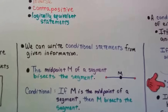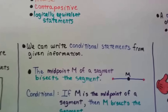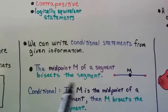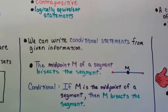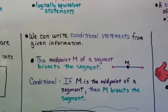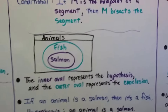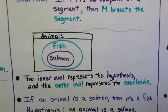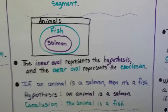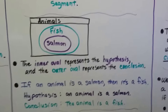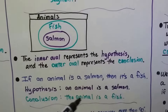We can write conditional statements from given information. The midpoint m of a segment bisects the segment. The hypothesis is 'midpoint m of a segment,' the conclusion is 'bisects the segment.' So the conditional is: if m is the midpoint of a segment, then m bisects the segment. Here we have a group of animals, some of them are fish, and some of the fish are salmon. The inner oval represents the hypothesis — that would be the salmon — and the outer oval represents the conclusion: fish. If an animal is a salmon, then it's a fish. Hypothesis: an animal is a salmon. Conclusion: the animal is a fish.